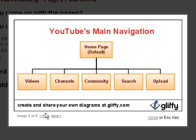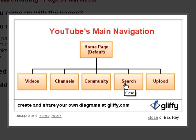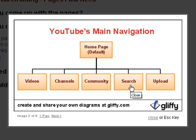Then I have an example here for YouTube's main navigation. The home page is their default navigation. Then they have a Videos tab, Channels tab, and Community tab. Also in the top header section there's a search function and a yellow button for you to upload your video. These are important to YouTube, so they have made these their important links and made them the main navigation list.